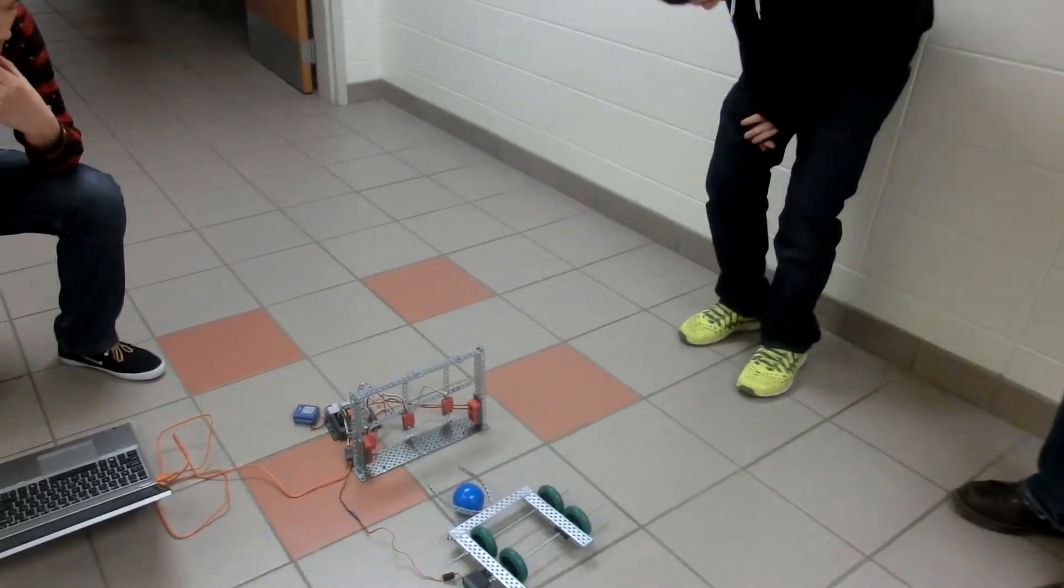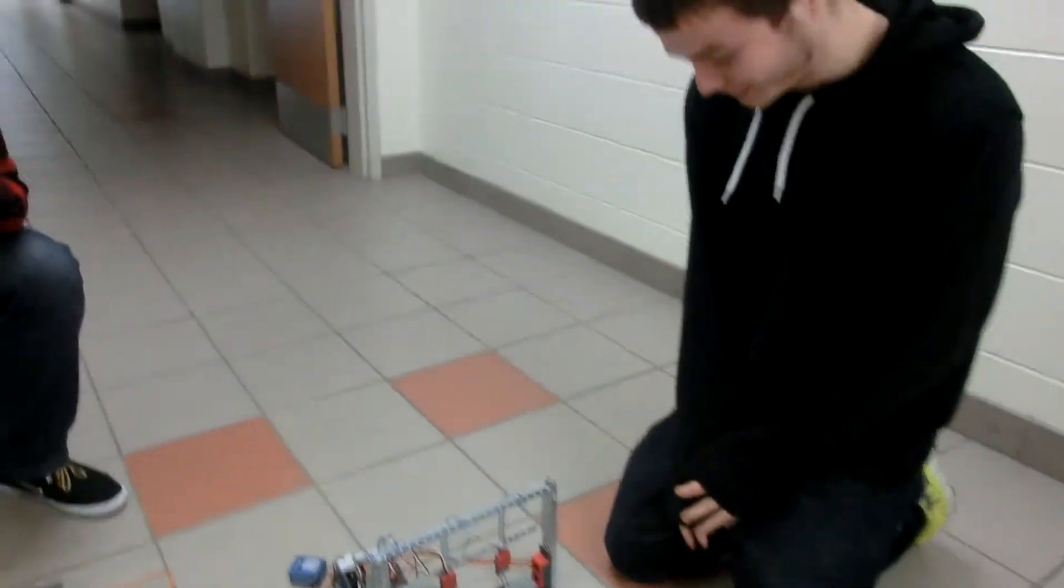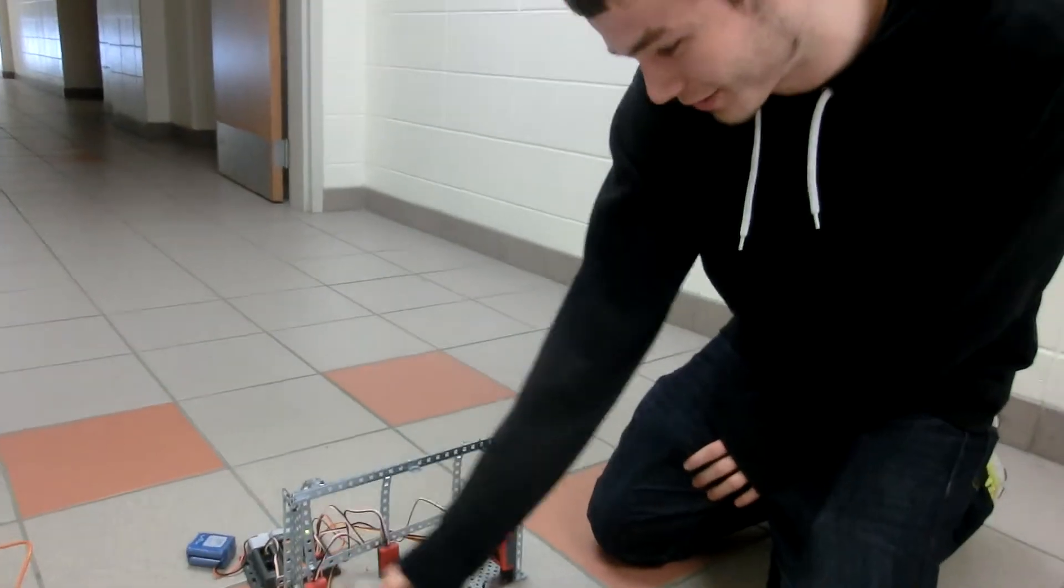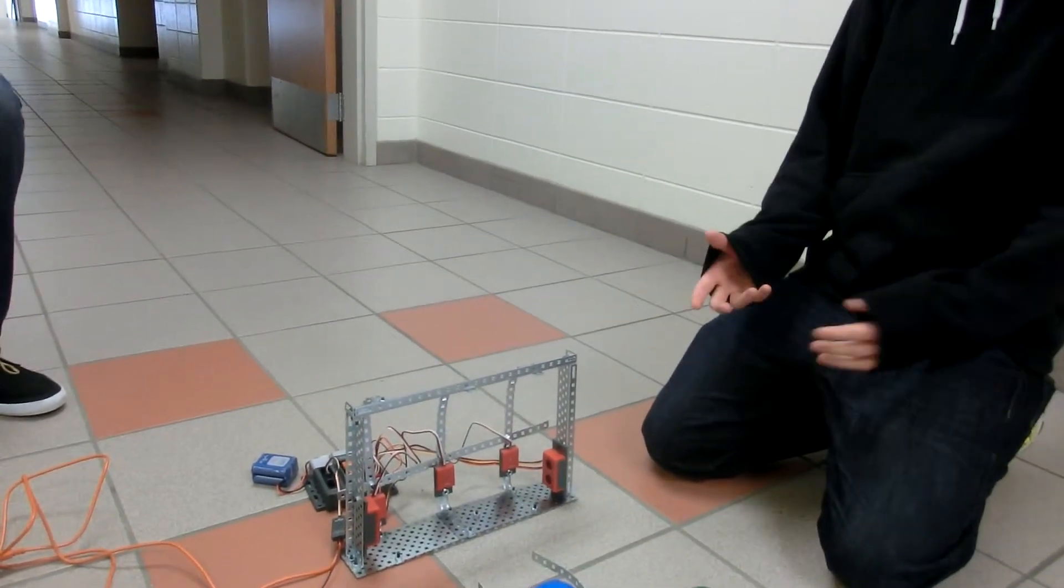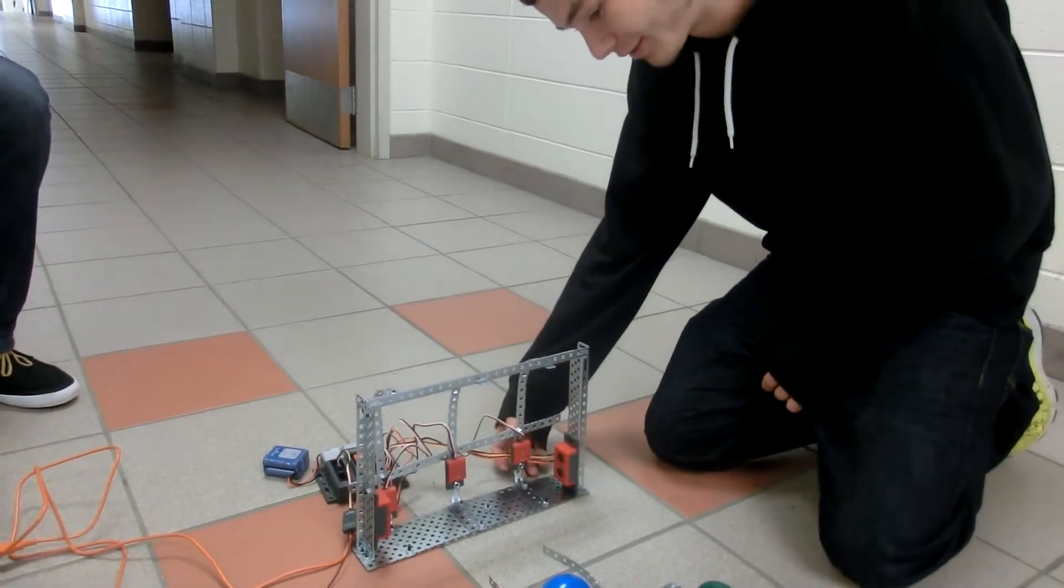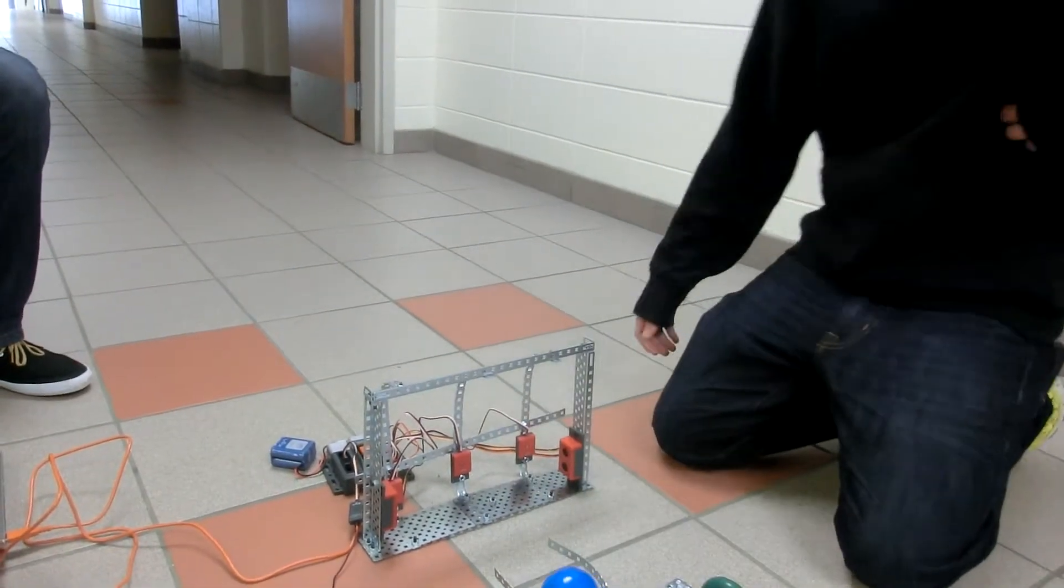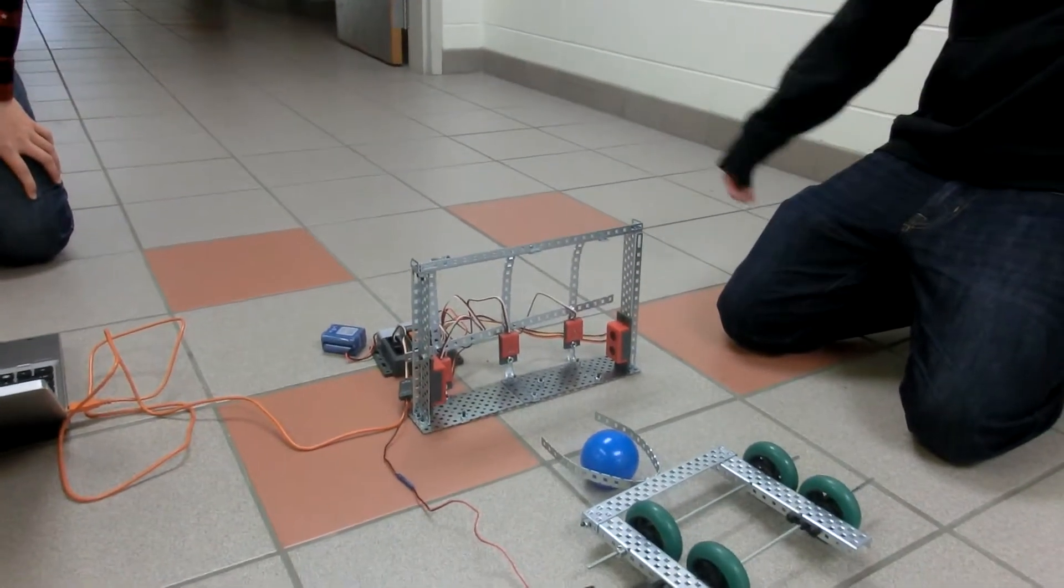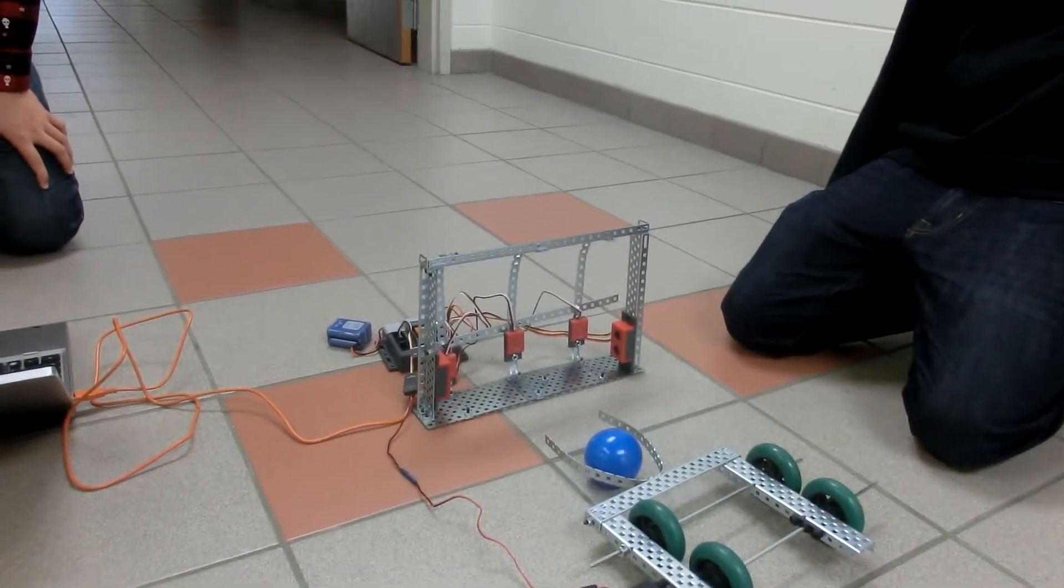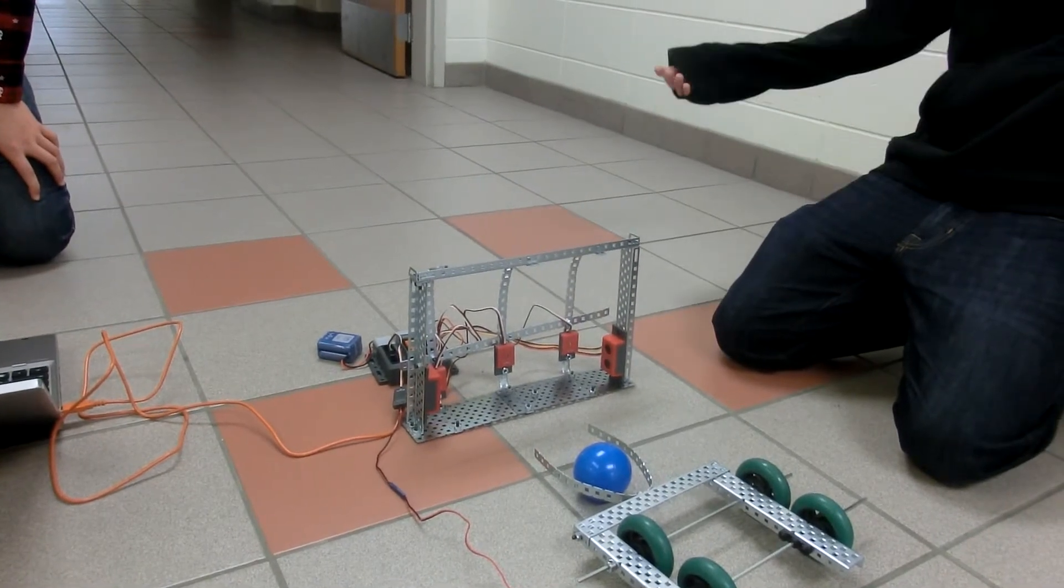And basically the things we use, we use two ultrasonic sensors on each side to detect when the ball crosses the line, and then to differentiate between a person and the ball, we use the light sensors, figuring that the ball, since it's lighter, and then the player would use a dark uniform, they'd give off different readings on the light sensor, so it could differentiate which was the ball and which was the person.